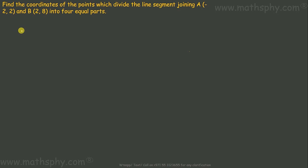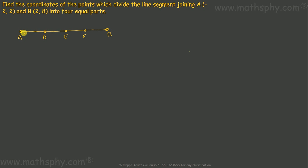So let's take it this way. This is A and this is B. I need 3 points — 1, 2, and 3. Let's name them D, E, and F. Now these 3 points divide line segment AB into 4 equal parts, meaning all segments would be equal to each other — each would be 1/4 of AB.